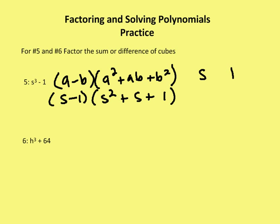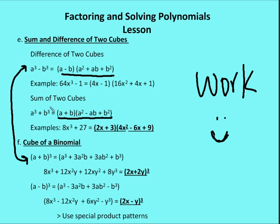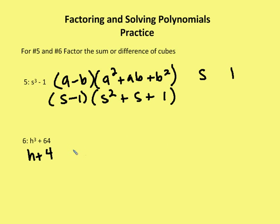Let's take a look at the product pattern for this sum of two cubes. I have h plus 4 as my a and b values. Sum of two cubes is a plus b times a squared minus ab plus b squared. So I have a plus minus plus pattern. So I write this as h plus 4 times h squared minus 4h plus 16.